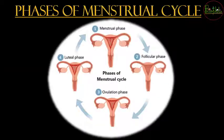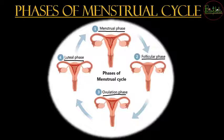The phases of the menstrual cycle are: the menstrual phase, the follicular phase, the ovulation phase, and the luteal phase. Now we need to dig deep into these phases to understand the actual changes that occur.